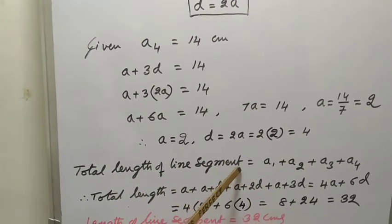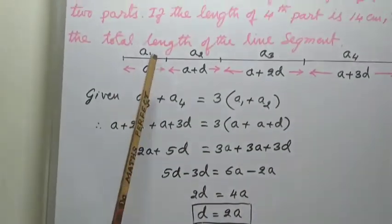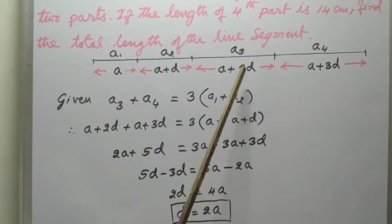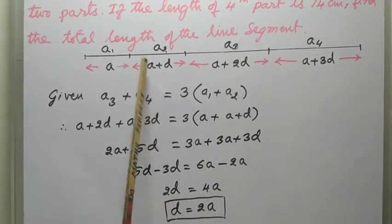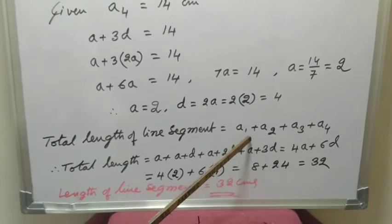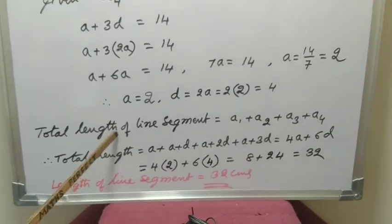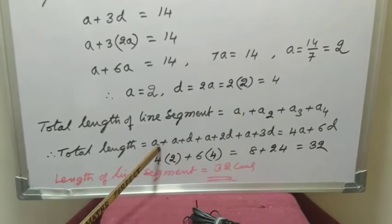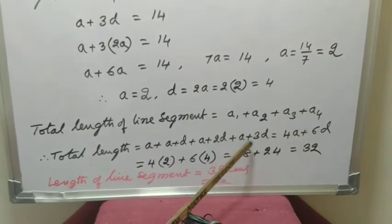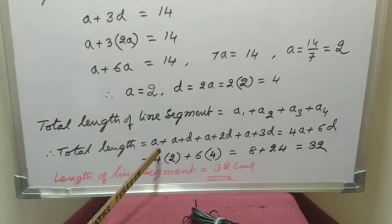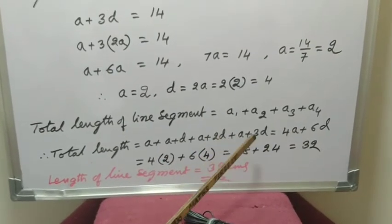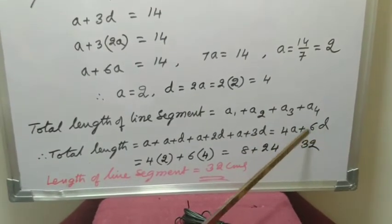Total length of the line segment equals A1 plus A2 plus A3 plus A4, which is A plus (A plus D) plus (A plus 2D) plus (A plus 3D). Simplifying: 4A plus 6D. That is the total length.